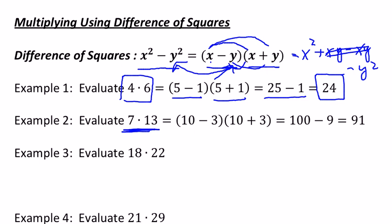So we write 7 times 13 is 10 minus 3 times 10 plus 3. Well, that's just difference of squares, so that is the same as 100 minus 9, which equals 91.